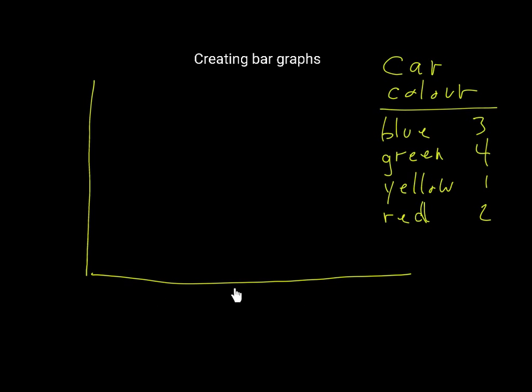When you are writing these labels along here, you need to make sure that you are spacing them evenly. So make sure that you don't have a big space here for blue and a big space here for green and a big space here for yellow and then the red one just tucked in at the end.